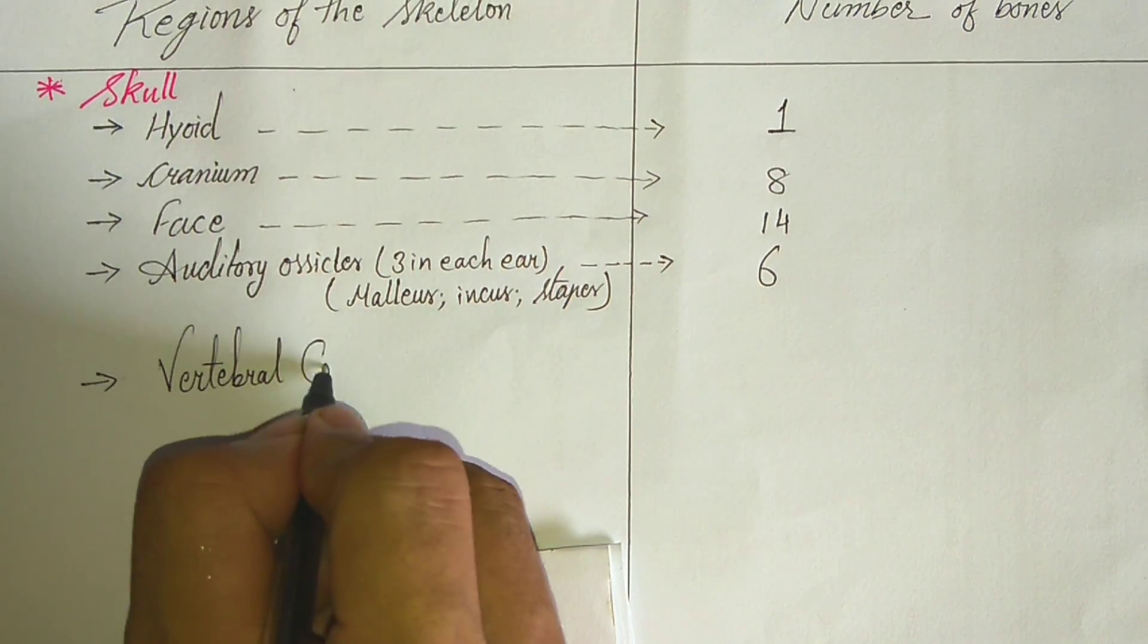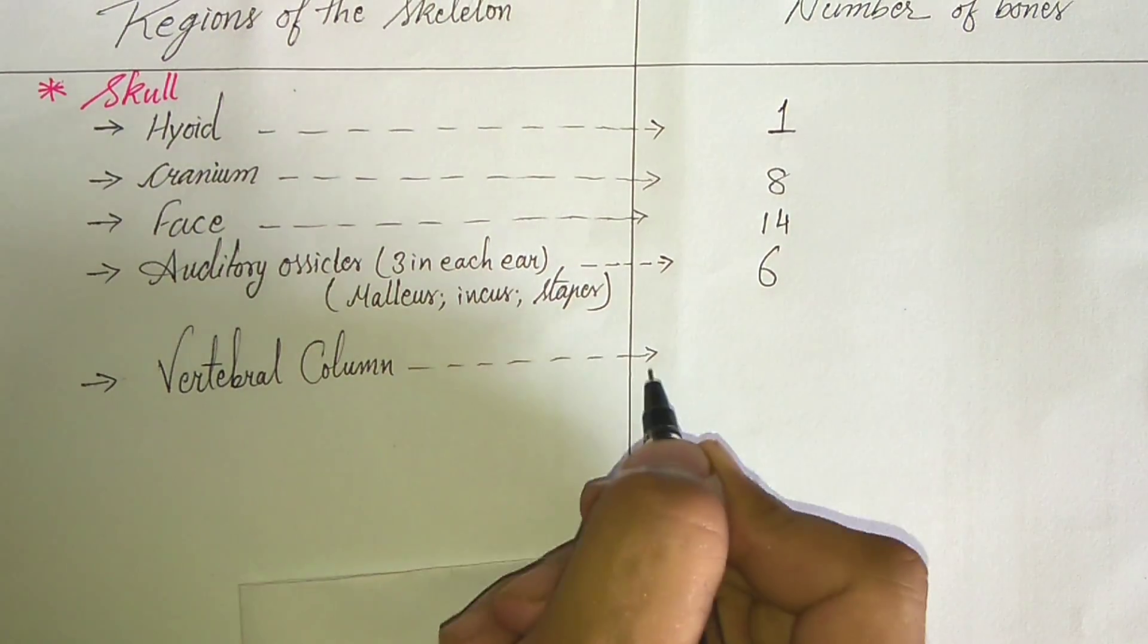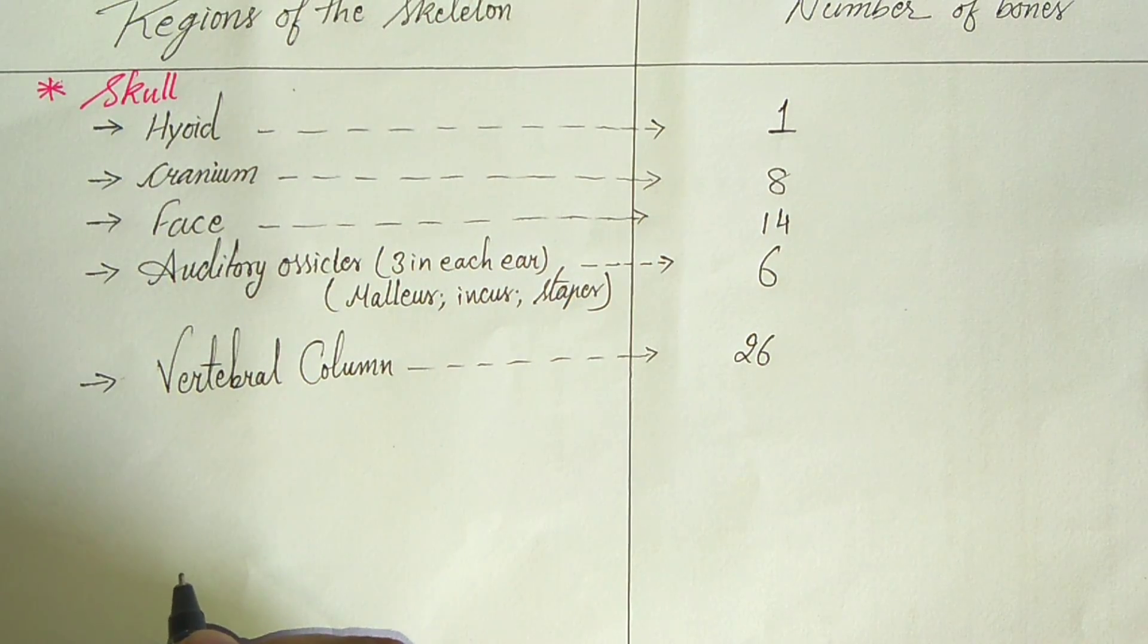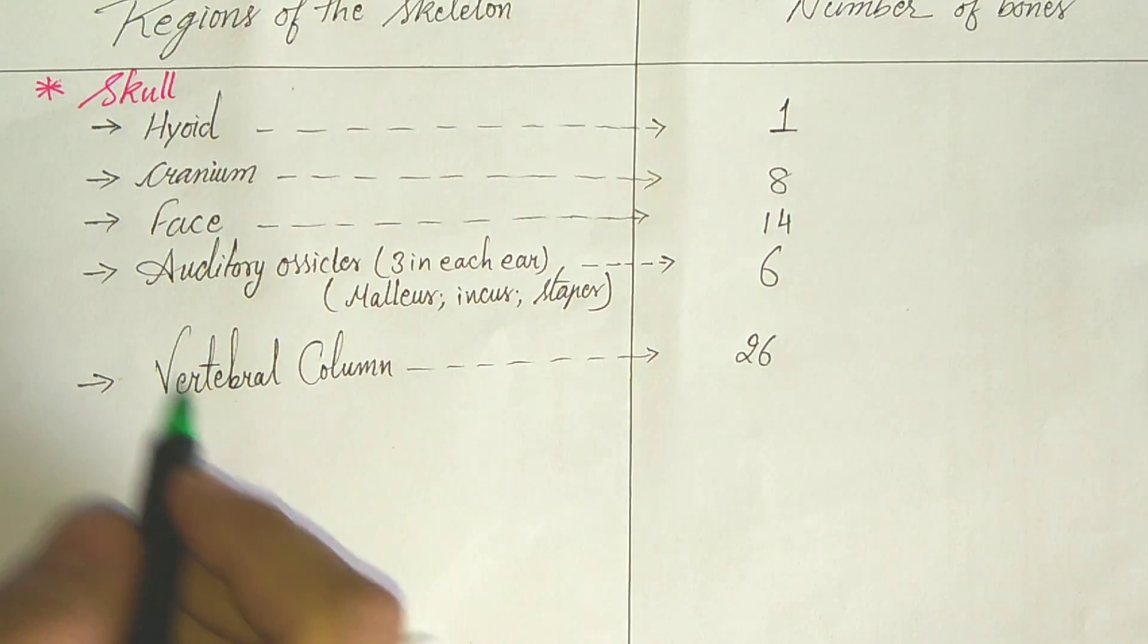Now come to the vertebral column. 26 bones.